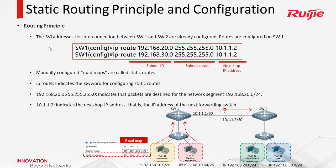So here, we need to configure a static route using this format: IP route, the destination IP address, mask, and next hop. For SW1, the next hop is SW2.